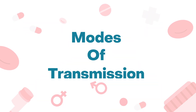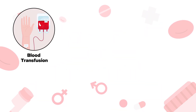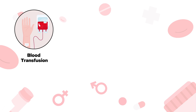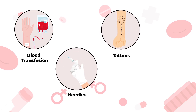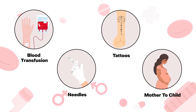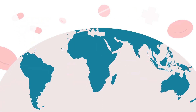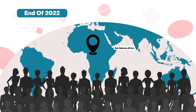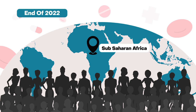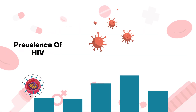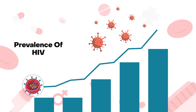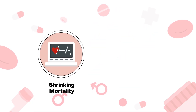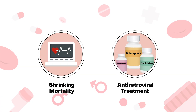Eventually, other modes of transmission were identified, including bloodborne — for example, via blood transfusion, tattoos and needles — as well as from mother to child. Globally, 39 million people were living with HIV at the end of 2022, the majority residing in the developing nations of sub-Saharan Africa. The prevalence of HIV continues to increase from ongoing new infections and the shrinking mortality of those already infected on antiretroviral treatment.